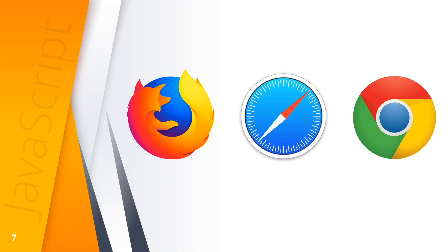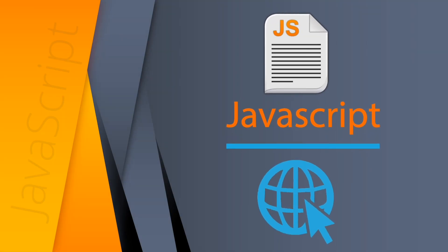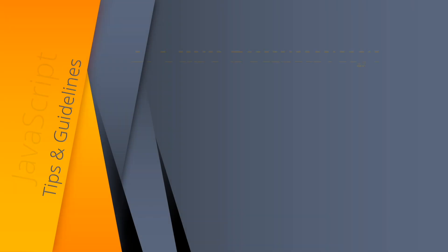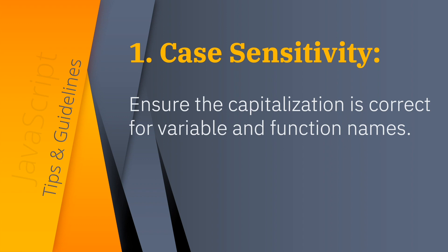JavaScript can be used to make web pages dynamic, react to events, validate data, create cookies, and detect browser information. The following are important things to know when coding with JavaScript. First, JavaScript is case sensitive. Therefore, ensure the capitalization is correct for variable and function names. A variable named myIndex is not the same as myindex.